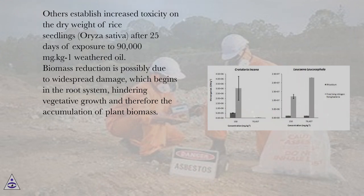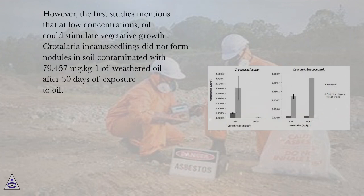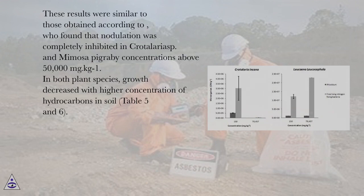Biomass reduction is possibly due to widespread damage which begins in the root system, hindering vegetative growth and therefore the accumulation of plant biomass. However, the first studies mention that at low concentrations, oil could stimulate vegetative growth. Crotalaria incana seedlings did not form nodules in soil contaminated with 79,457 mg·kg⁻¹ of weathered oil after 30 days of exposure. These results were similar to those obtained by others, who found that nodulation was completely inhibited in Crotalaria sp. and Mimosa pigra at concentrations above 50,000 mg·kg⁻¹.